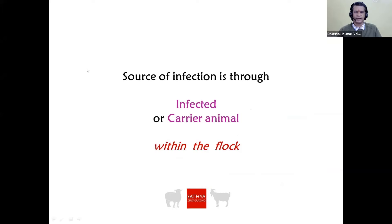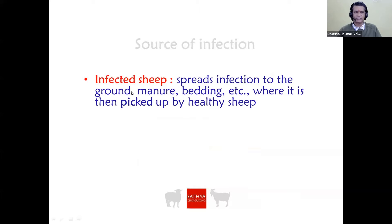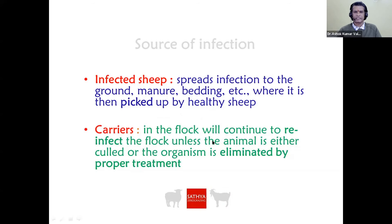The source of infection is through infected and carrier animals. An infected animal spreads infection to the ground, manure, and bedding, which is then picked up by healthy sheep. Carriers continue to reinfect the flock until the animal is culled or the organism is eliminated by proper treatment. As long as a carrier is present in the flock, it remains a source of infection.